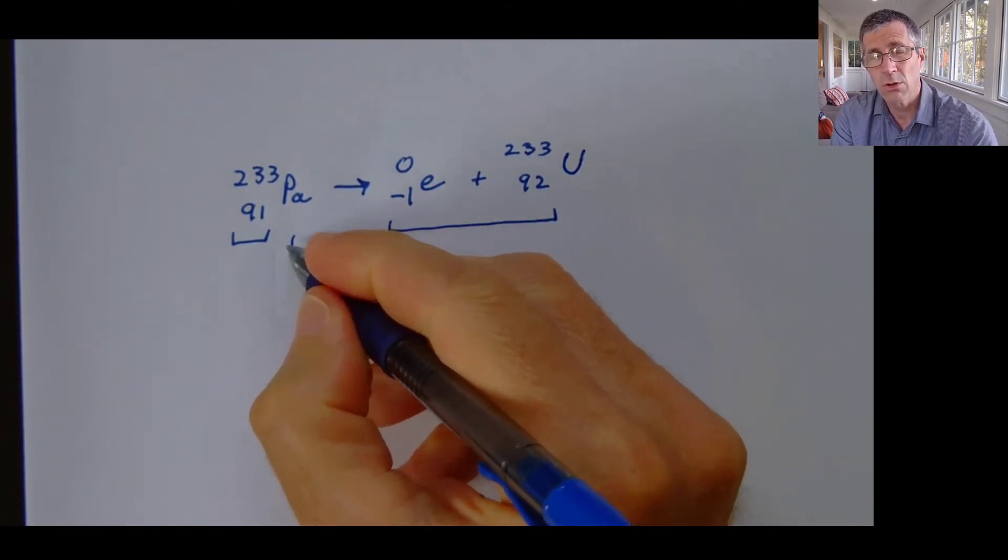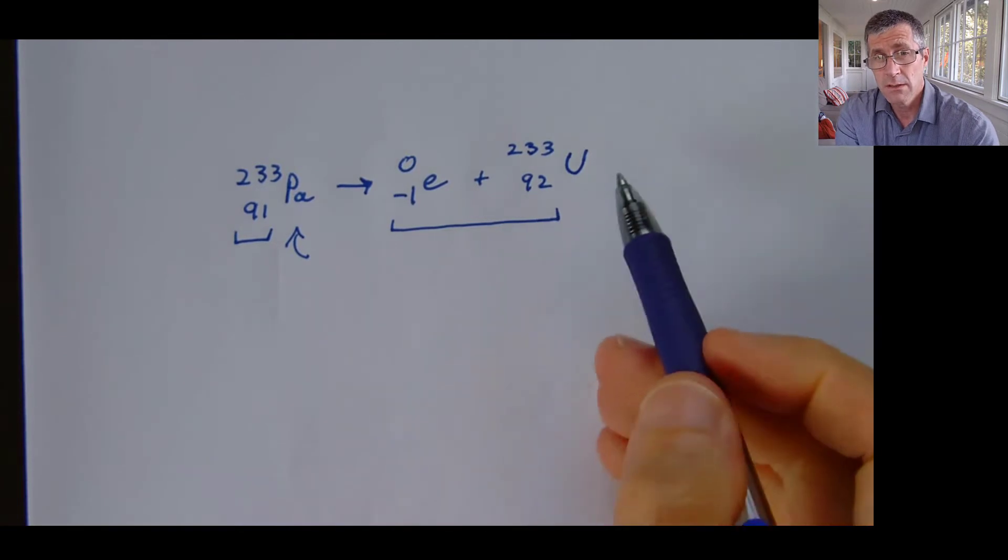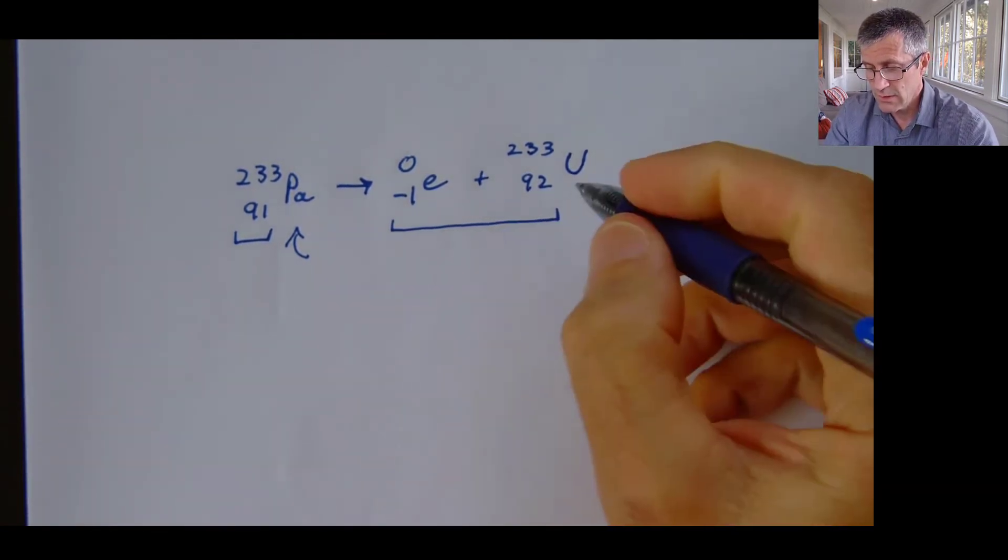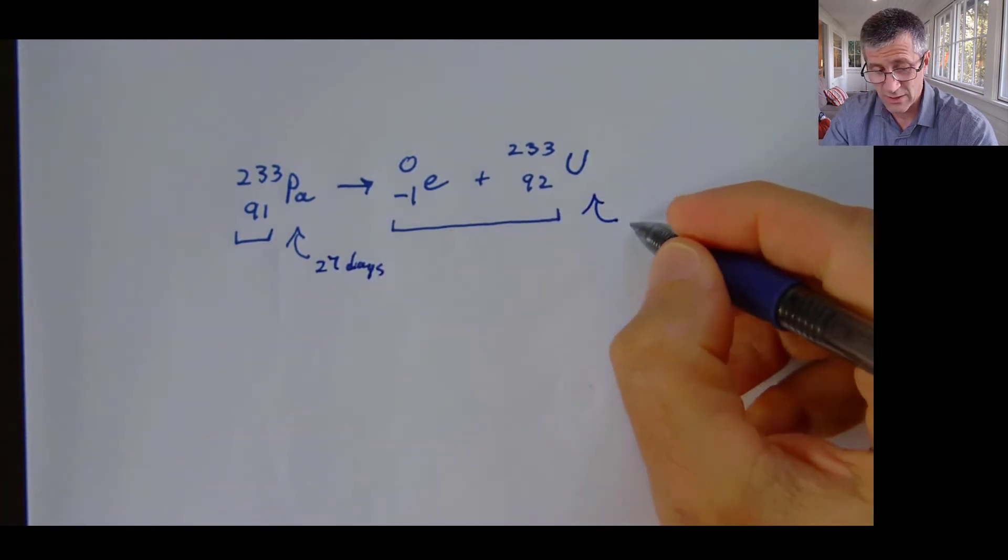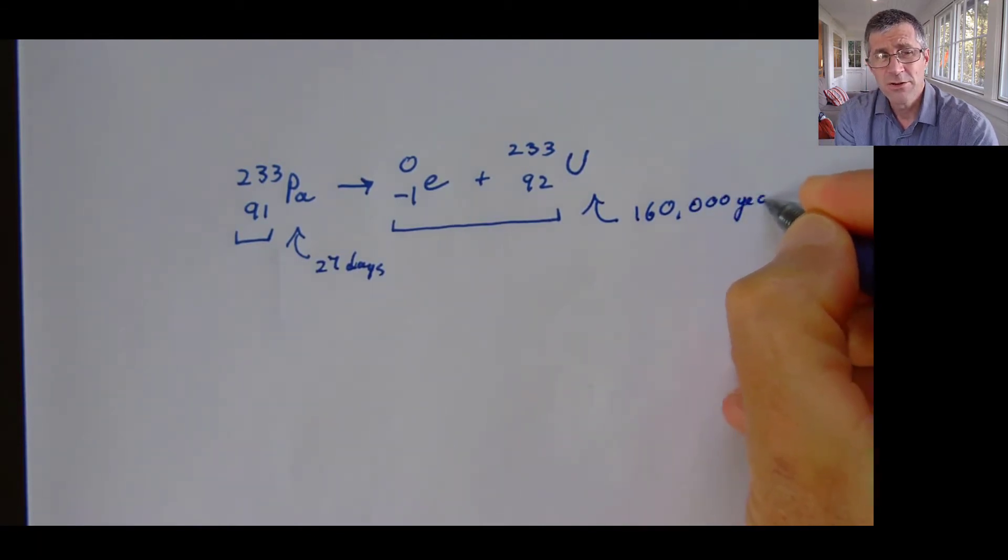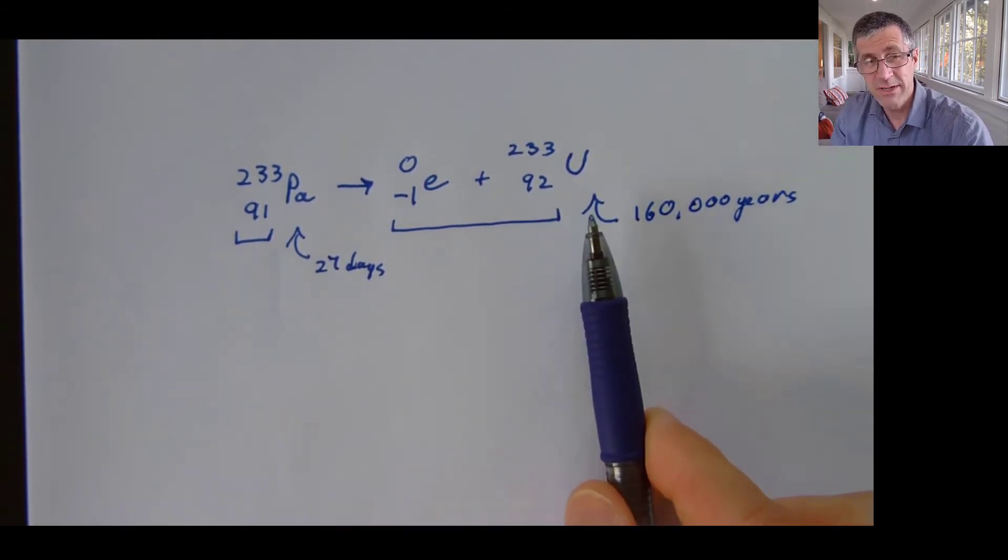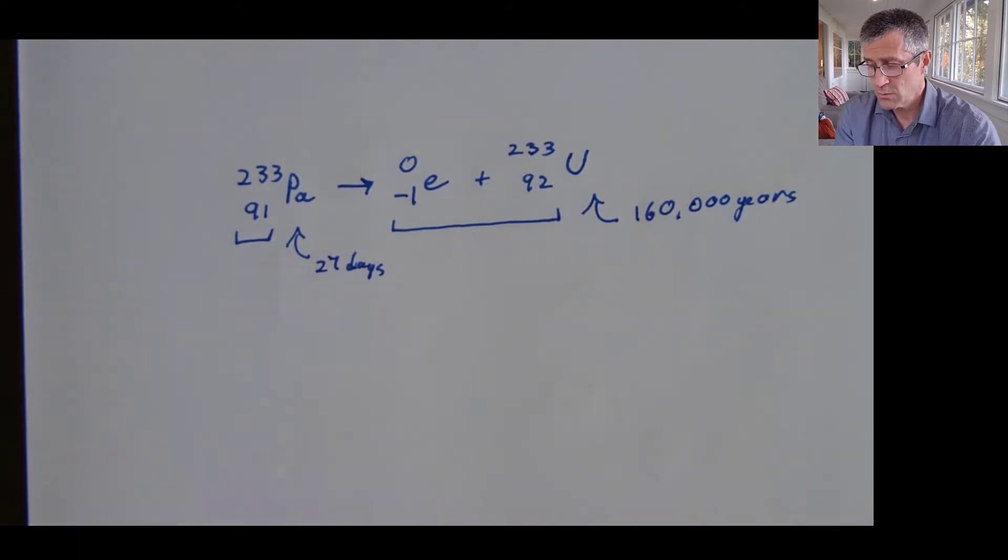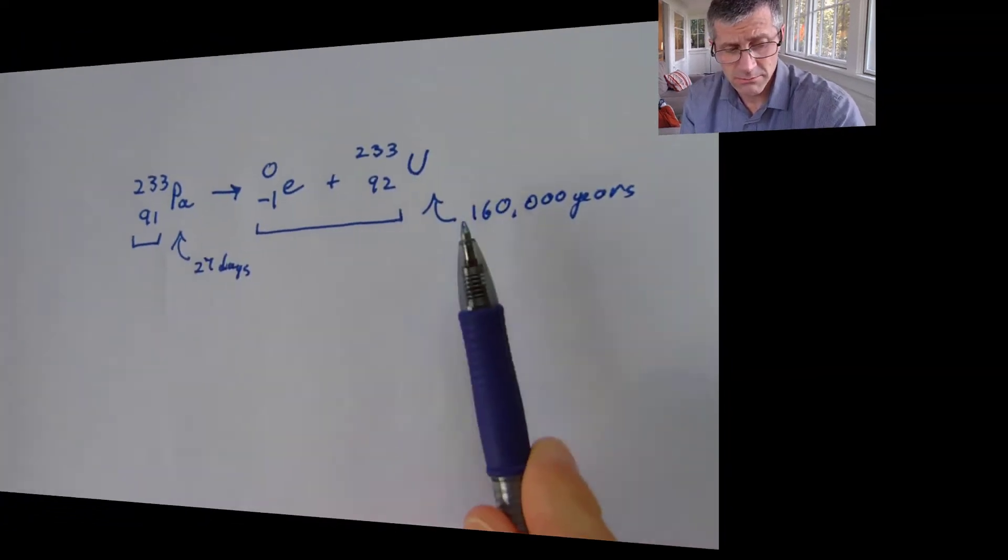And this is one of the ways that uranium gets generated through the decay of protactinium. Interestingly, protactinium doesn't last very long. So it has a half-life of 27 days, meaning that every 27 days, half of it decays into uranium. And uranium has a half-life on the order of 160,000 years. So if you wait 160,000 years, half of the uranium that you had at the beginning will decay into something else, and half of it will still be there. So what happens is we end up accumulating. So protactinium decays and accumulates in uranium.